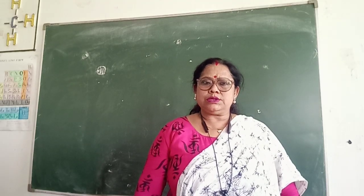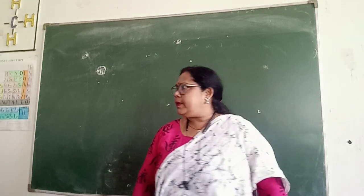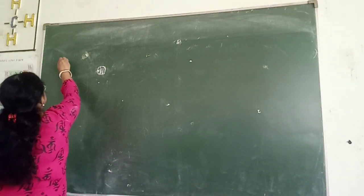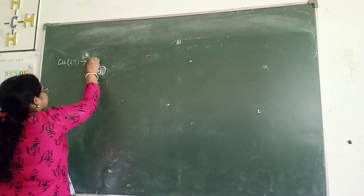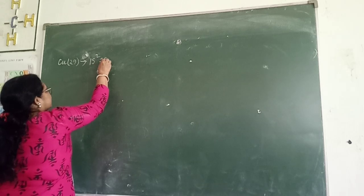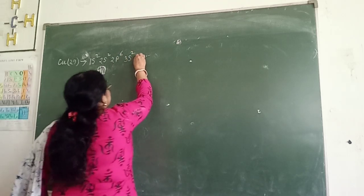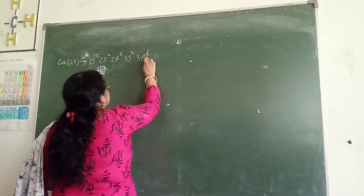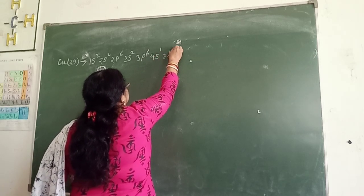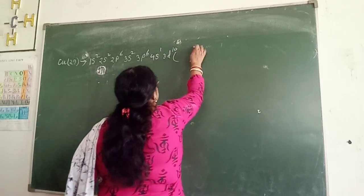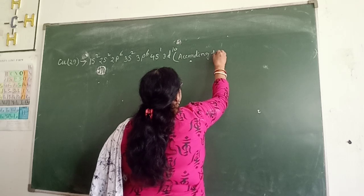Here the d orbitals consist of 9 electrons, but that is wrong. The general configuration of copper, Cu 29, is: 1s2, 2s2, 2p6, 3s2, 3p6, 4s1, 3d10. According to the above principle.